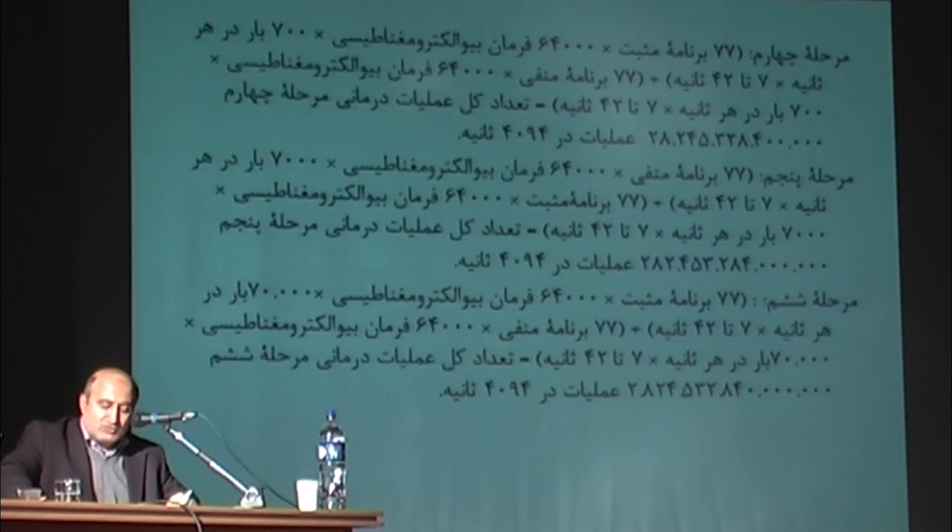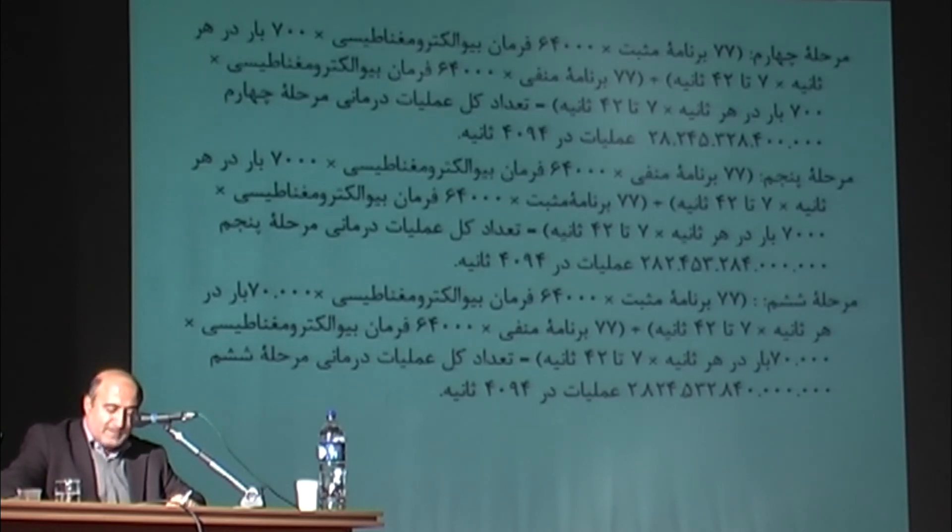Phase 5: 77 negative programs multiplied by 64,000 bioelectromagnetic commands multiplied by 7,000 times per second multiplied by 7 to 42 seconds, plus 77 positive programs multiplied by 64,000 bioelectromagnetic commands multiplied by 7,000 times per second multiplied by 7 to 42 seconds, equals a total number of fifth phase treatment operations of 282,453,284,000,000 in 4,094 seconds.